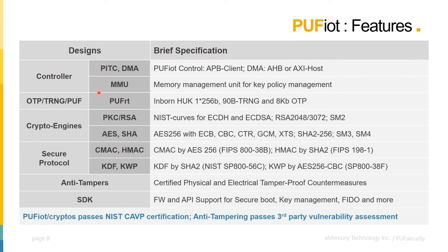Two, PUF-RT is the hardware-rooted trust that forms the basis of PUF-IoT, which consists of three major parts: eight kilobits of secure OTP storage; PUF, from which the hardware unique key is sourced; and TRNG, which is NIST compliant as an entropy source.